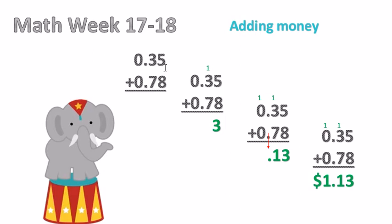So our problem that we're going to work on is 35 cents plus 78 cents. The first thing we're going to do is begin our addition in the ones place, just like all the time. So 5 plus 8 equals 13. So we place our 3 here and our 1 over the 3 in the tens place.